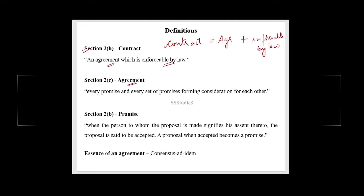What is an agreement? Every promise and every set of promises — so either an individual promise or a group of promises — forming consideration for each other will turn out to be an agreement.